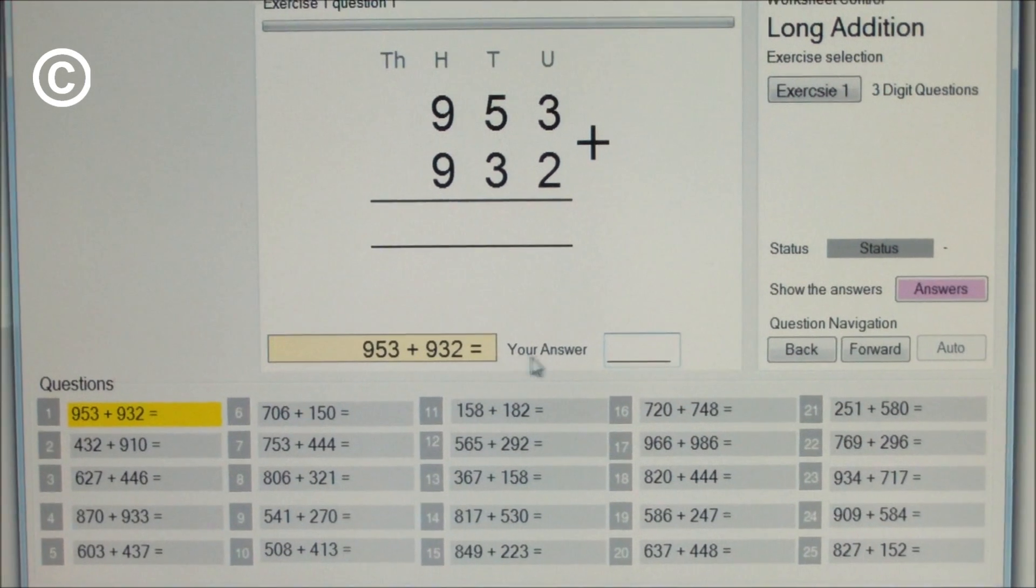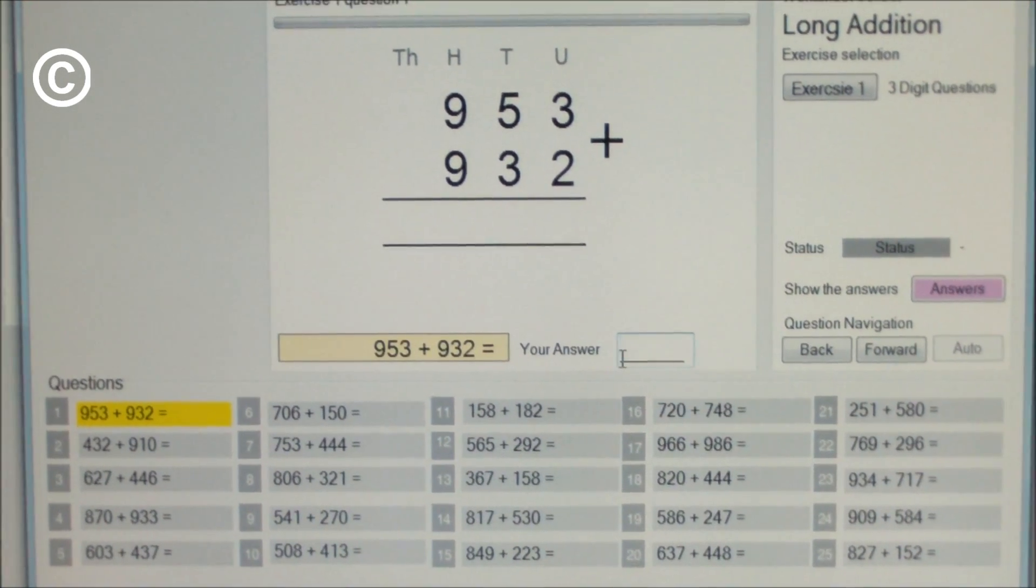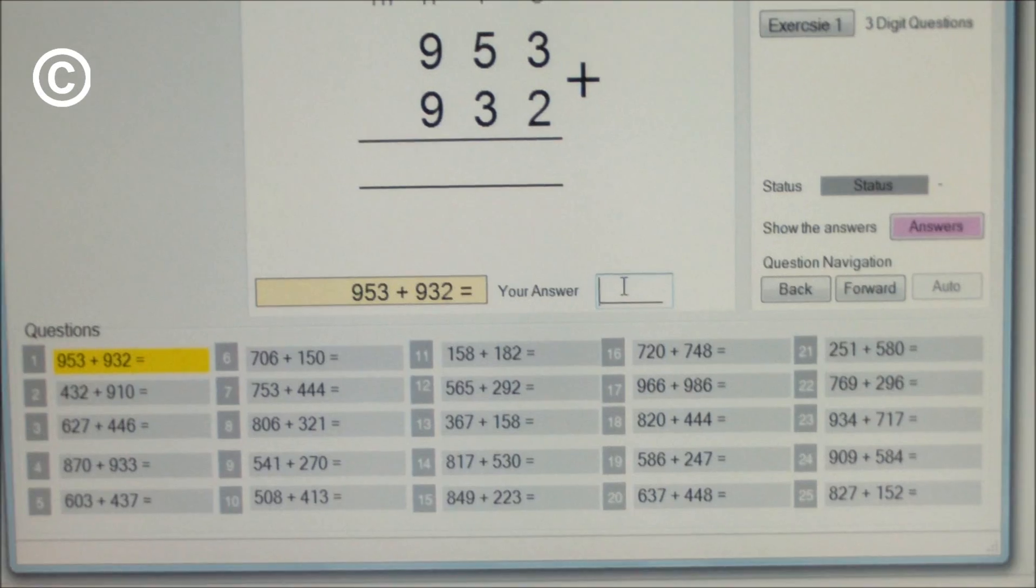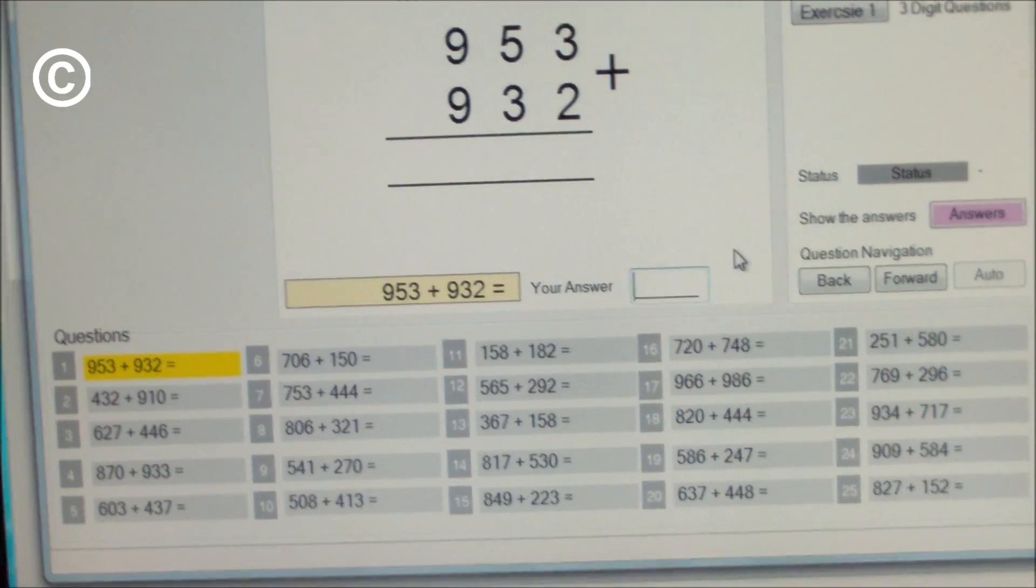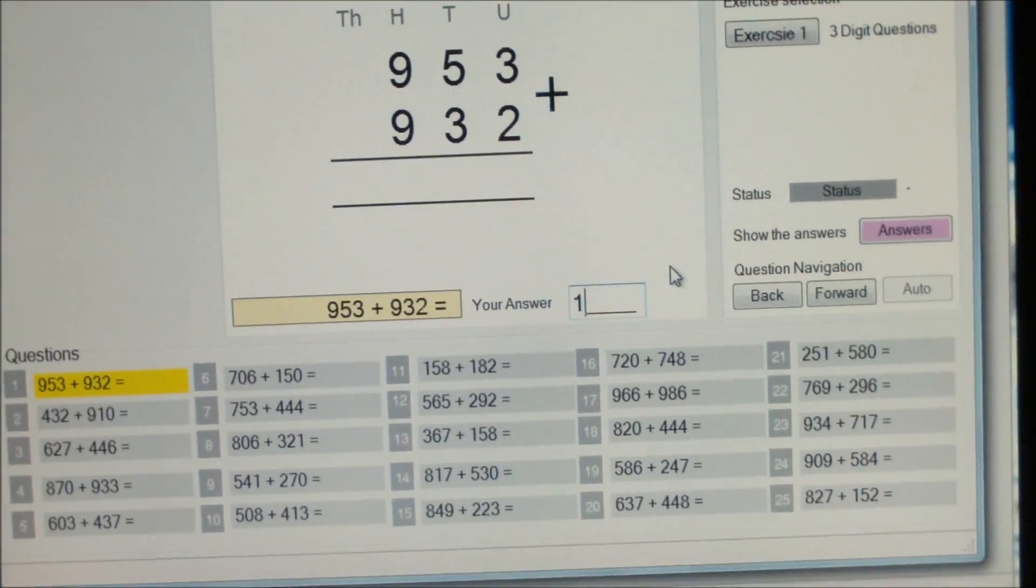So the first question here is 953 add 932. You enter your answer right here in the answer box, which is 1885.